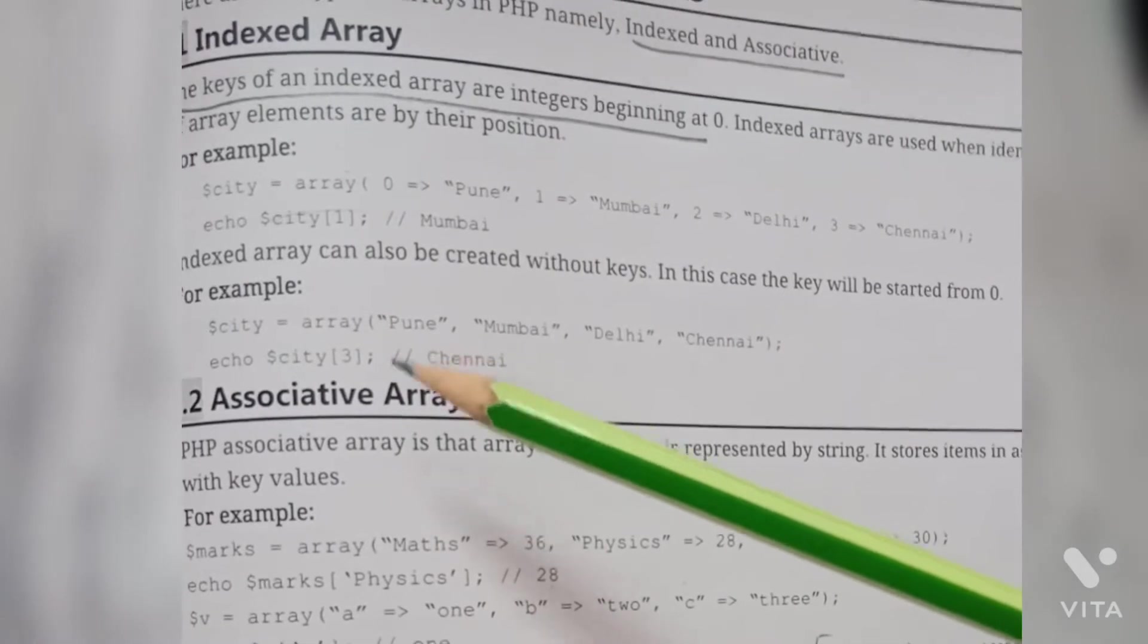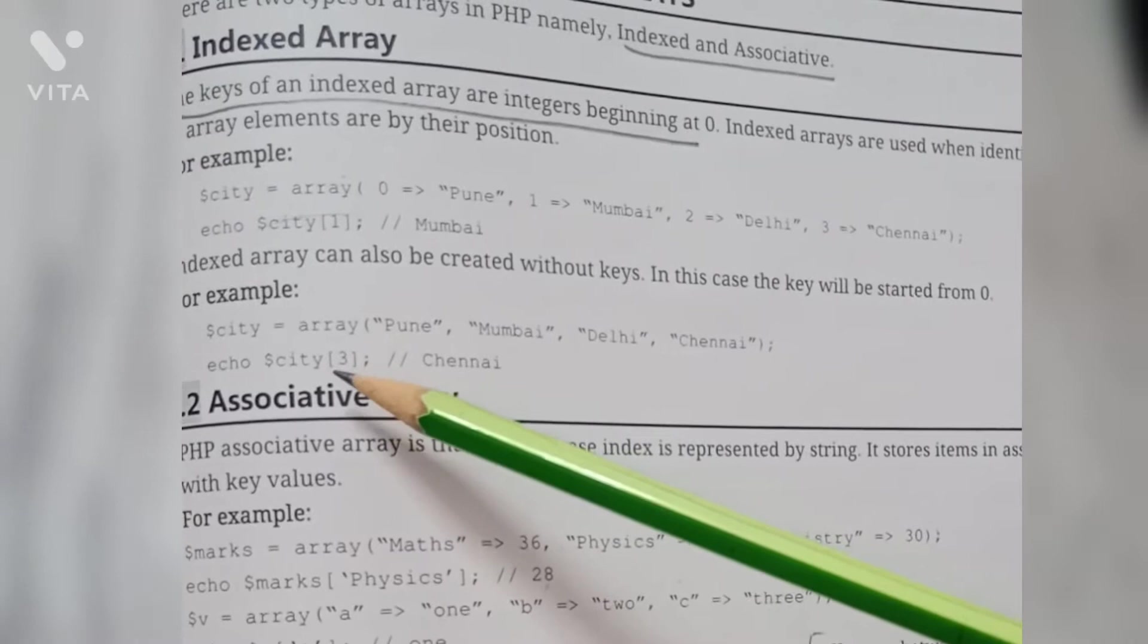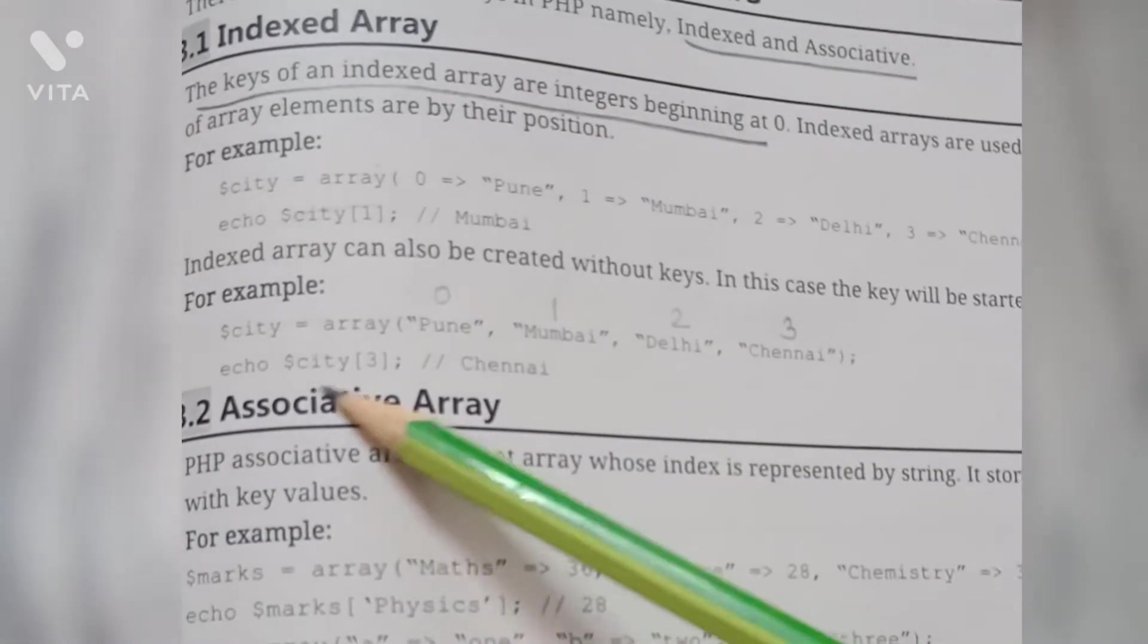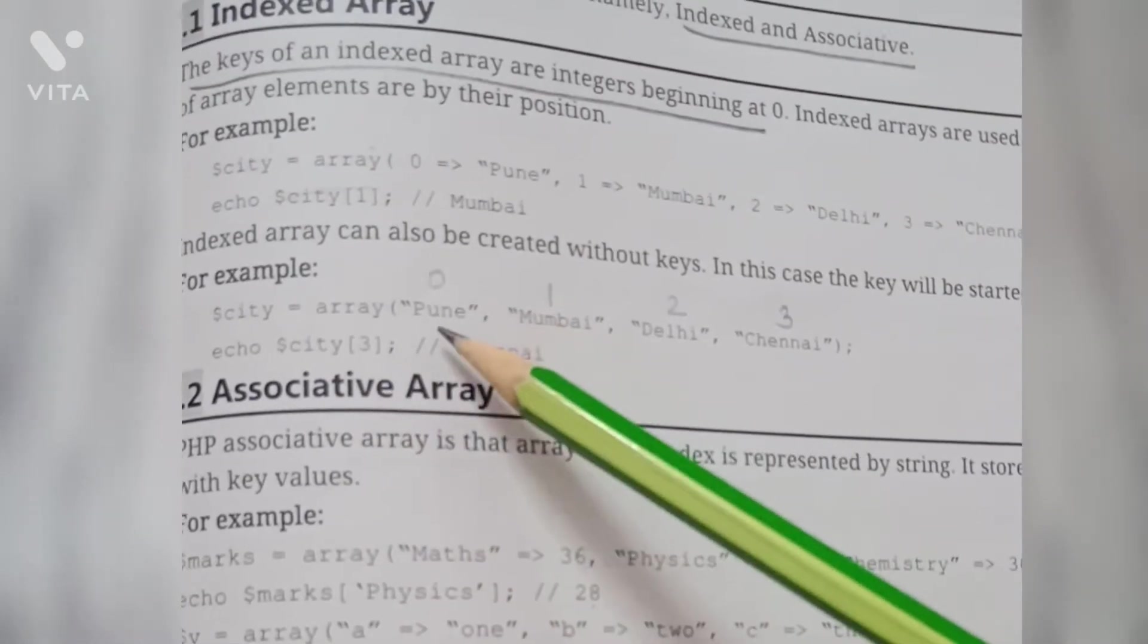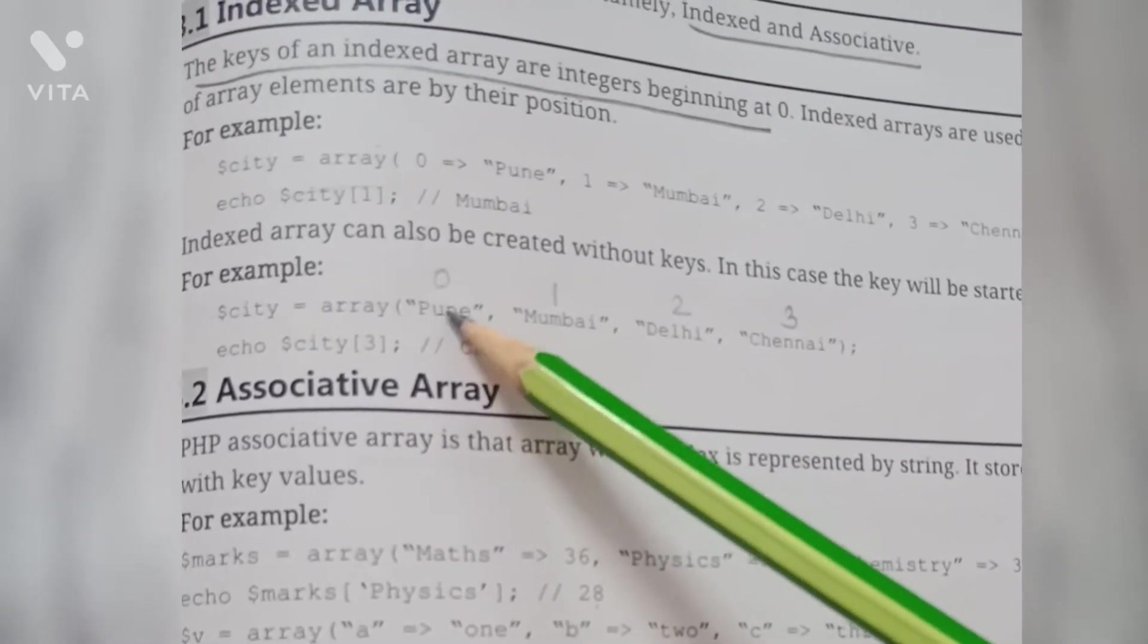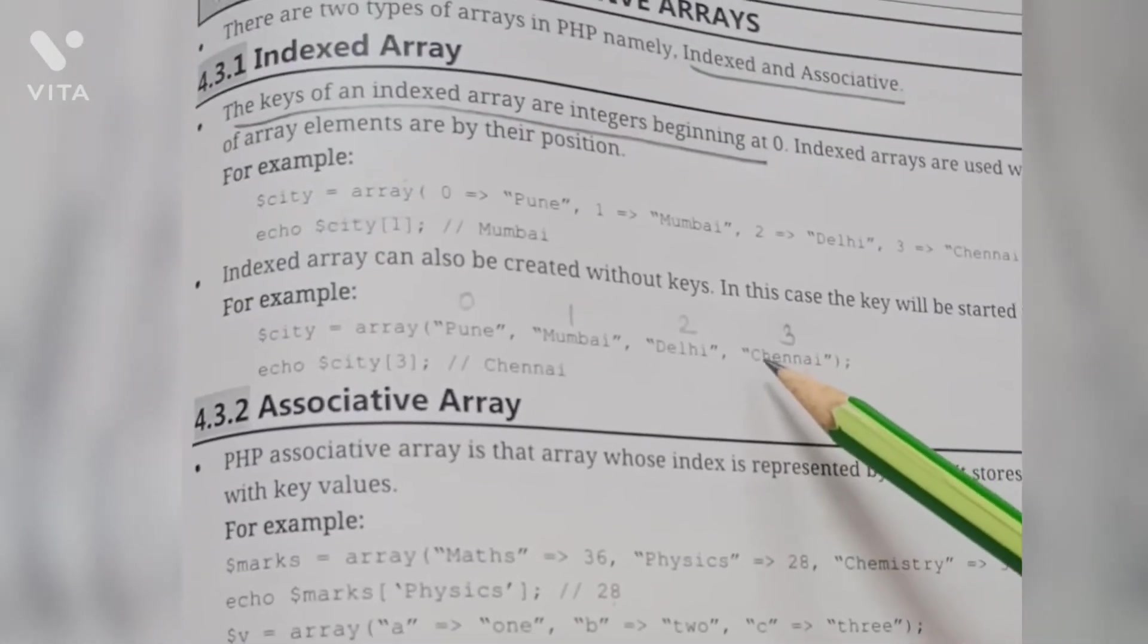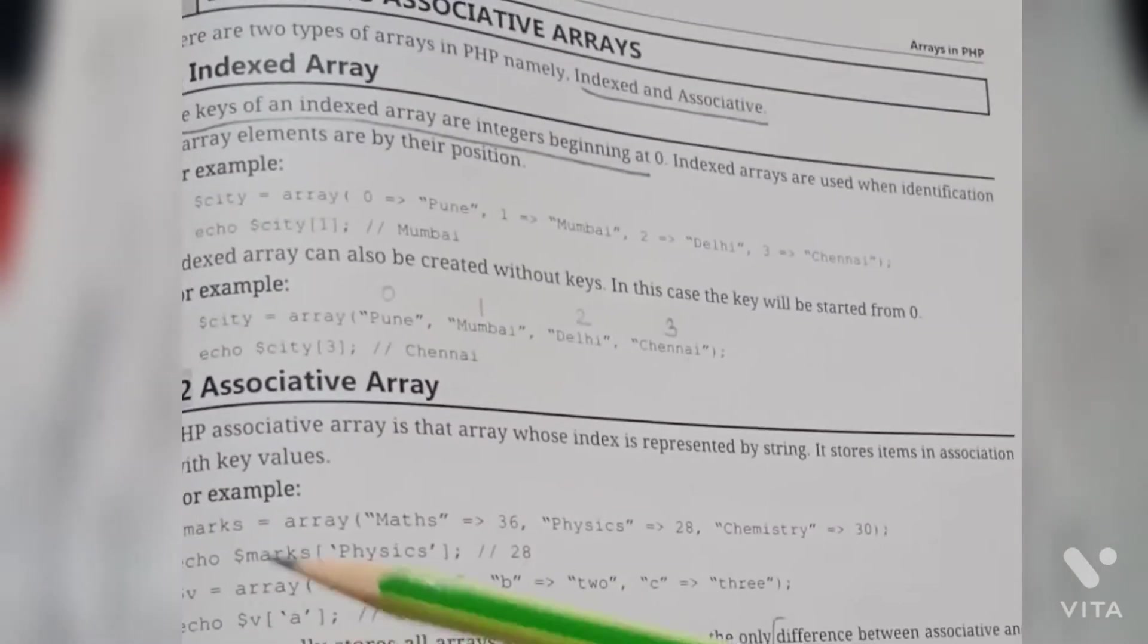Echo statement dollar city in brackets three - this statement will give the third value from the array. Indexing starts from zero, so this is zero element, first element, second and third. Output of echo statement will be Chennai. This is the first type of array, indexed array in PHP. Let's see the second one, associative array.